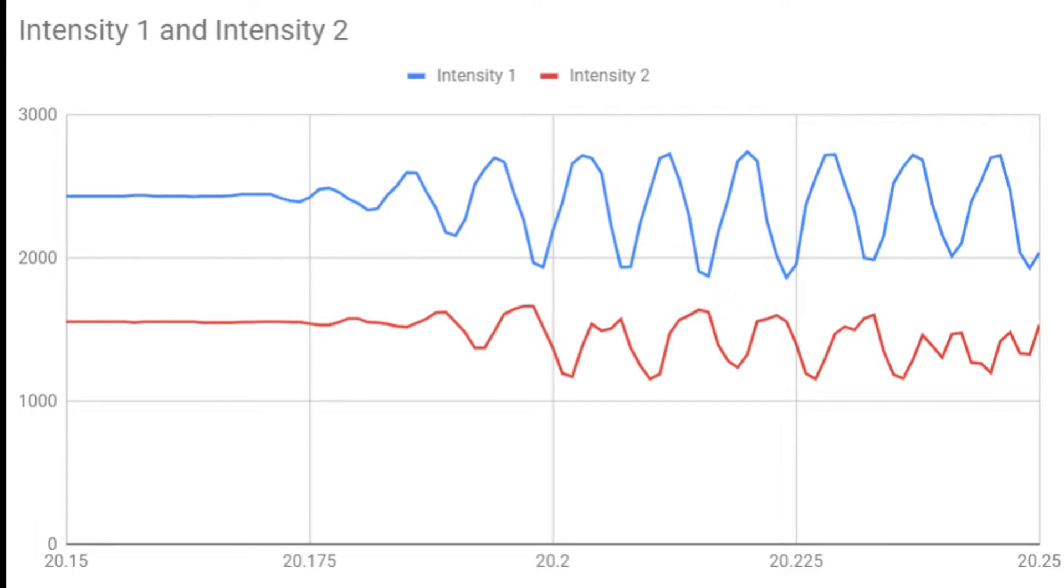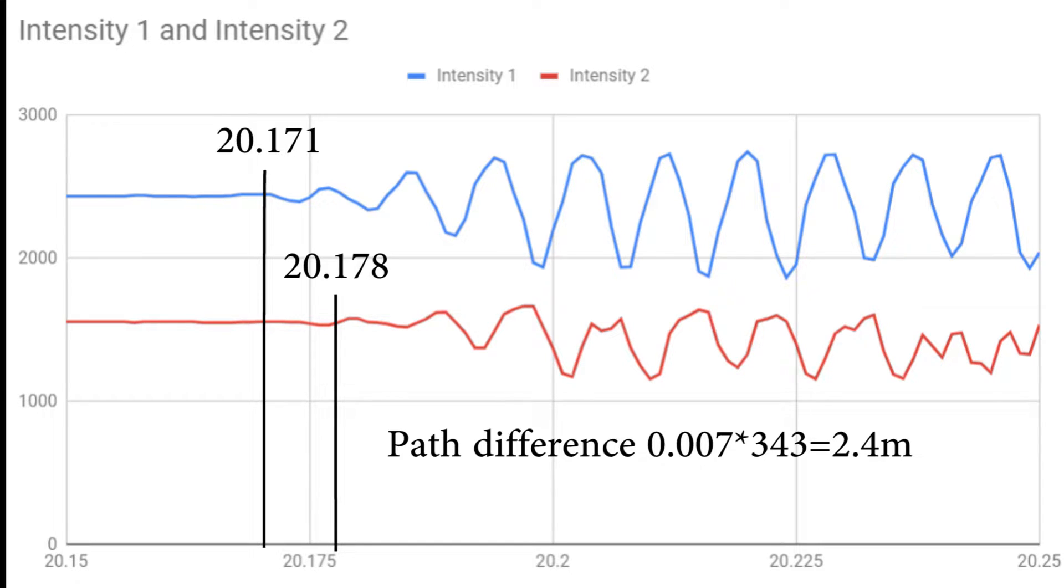Let us check the data from our data loggers. The sound waves vibrate the balloon mirror, causing a shift in the interference patterns. This will result in a change in the interference pattern, and thus a change in the intensity recorded by the loggers. As you can see here, the first interferometer picked up the sound at 20.171 seconds, and the second interferometer picked up the sound waves 7 milliseconds later. Since the speed of sound is roughly 343 meters per second, we can work out the difference in distance to be 2.4 meters.